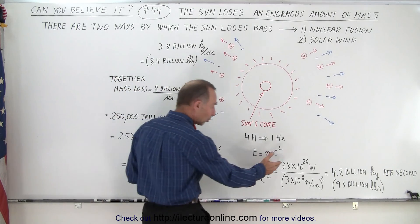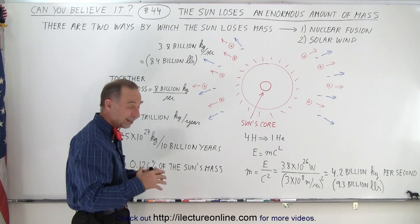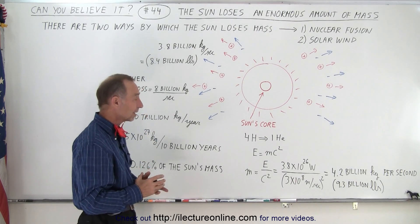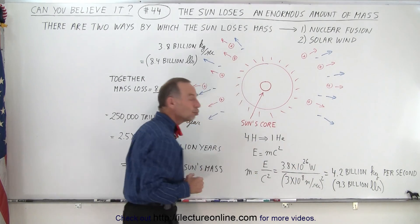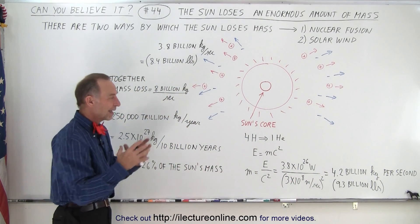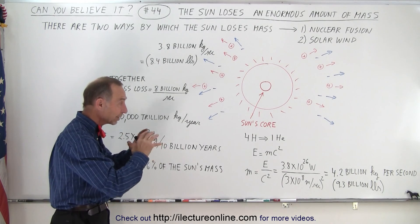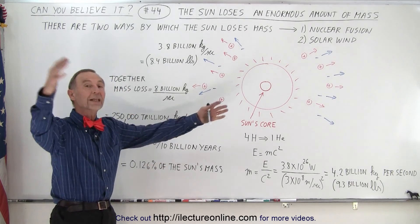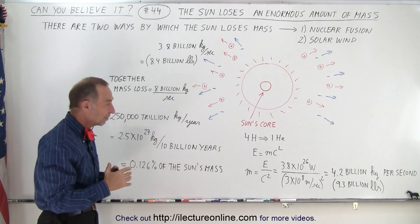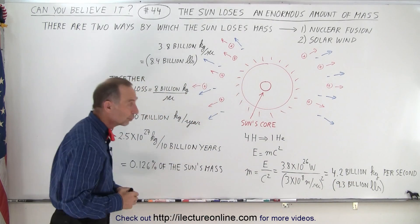The sun produces about 3.8 times 10 to the 26 watts. That's an enormous amount of energy every second. And if we divide it by the speed of light squared, we end up with 4.2 billion kilograms. Every single second, the sun converts 4.2 billion kilograms from matter into energy. That's about 9.3 billion pounds worth of material.